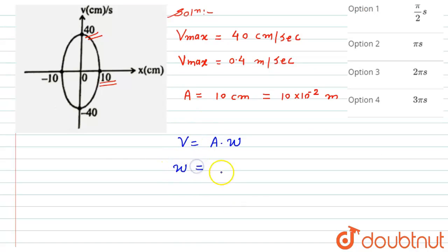Omega will be equals to v by A, that would be equals to 0.4 divided by 10 into 10 raised to minus 2. So after dividing it, this would become equal to 0.4 into 10 raised to 2, that would become equals to 4 second inverse.